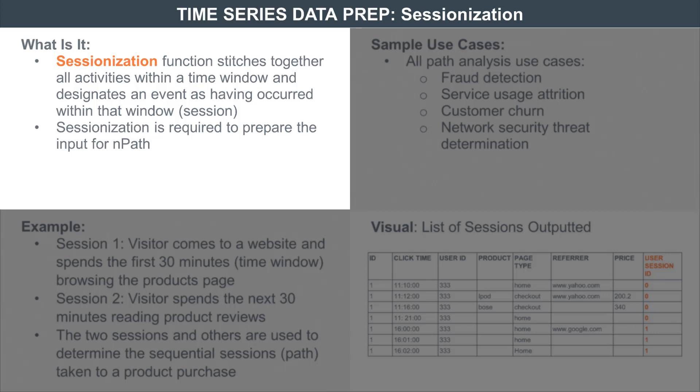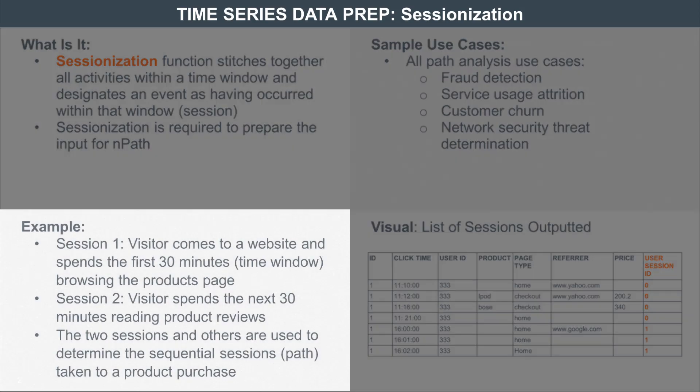How does this work? Typically when sessionization is done, someone identifies a session window — any activity which happens within that session window has to be associated with a particular session number. For example, in online shopping, if you click on the homepage at 7:10 pm and then click on a product page at 7:11 pm, these are two separate events but they happen in such close proximity that you don't really want two separate sessions within just under one minute.